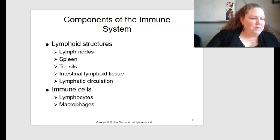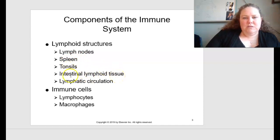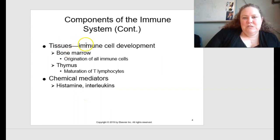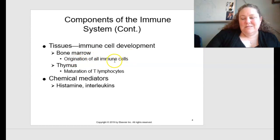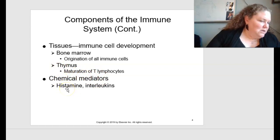When talking about components of the immune system, on page 115, you have your lymphoid structures, which include your lymph nodes, spleen, tonsils, intestinal lymphoid tissue, and lymphatic circulation. You have your immune cells, such as lymphocytes and macrophages. You have tissues involved in immune cell development, including bone marrow and thymus. Bone marrow is the origination of all immune cells. The thymus is responsible for the maturation of T lymphocytes. You also have chemical mediators such as histamine and interleukin.